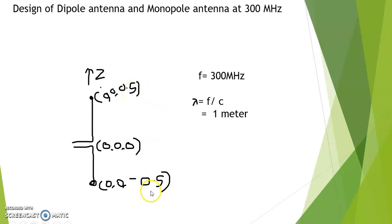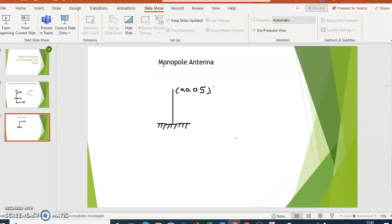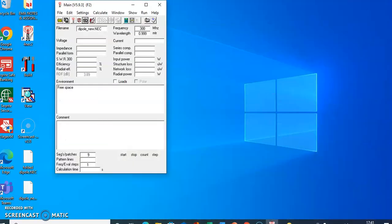Similarly, for the monopole antenna, there is a single pole only and the other pole is grounded. So we will consider only the length from 0 to 0.5 for this monopole antenna. Now let's see how to perform the simulation using 4NEC2.